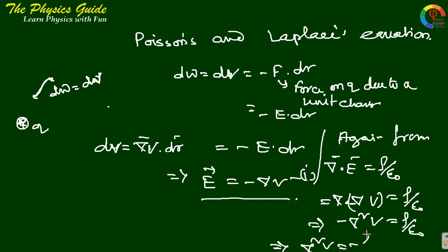This is called Poisson's equation. Del square V (potential) equals minus rho by epsilon naught. If rho equals zero, then del square V equals zero. This is called Laplace equation.